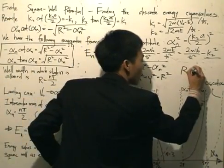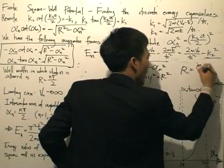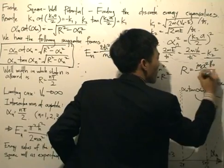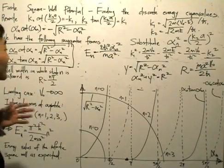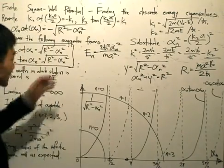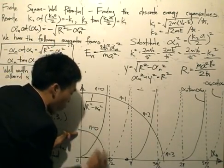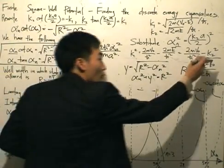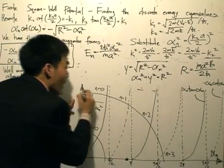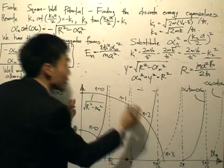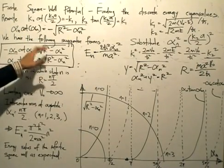Bearing in mind that r is equal to m·a²·v₀ divided by 2·ħ. So this is what we have for r. This is a circle for a certain value of the width of the well and the potential. If I were to increase the width of the well, I get a larger circle. So r is the radius of a circle, and this is for the right-hand side.